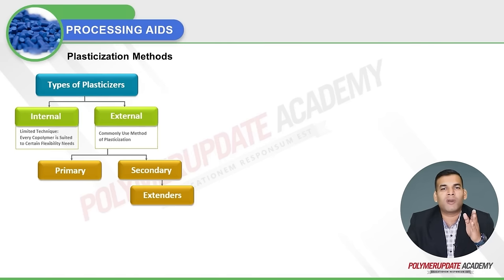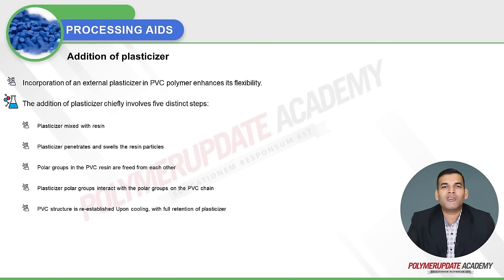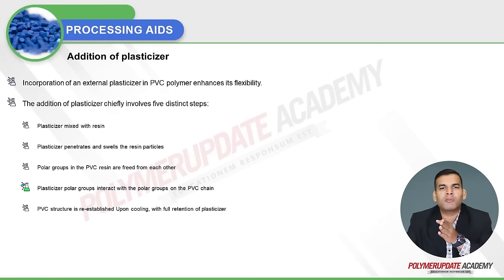External plasticization is further classified into primary and secondary plasticizers, where secondary are also termed as extenders. The incorporation of an external plasticizer in PVC involves five distinct steps: the plasticizer is first mixed with the resin; it penetrates and swells the resin particles; the polar groups in the PVC chain are freed from each other; these freed polar groups then interact with the plasticizer's polar groups; and the PVC structure is re-established upon cooling with full retention of the plasticizer.